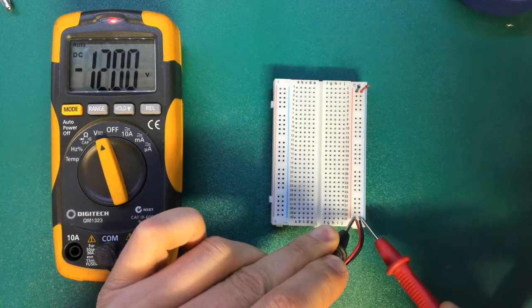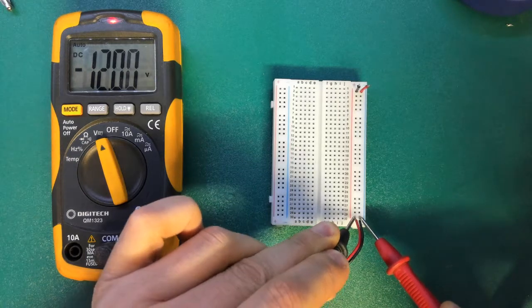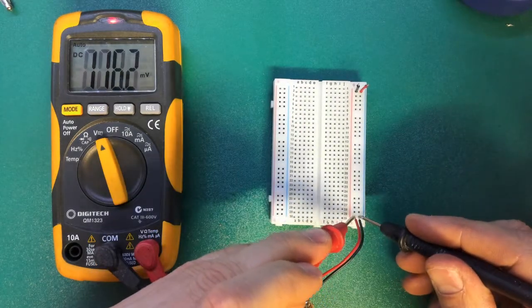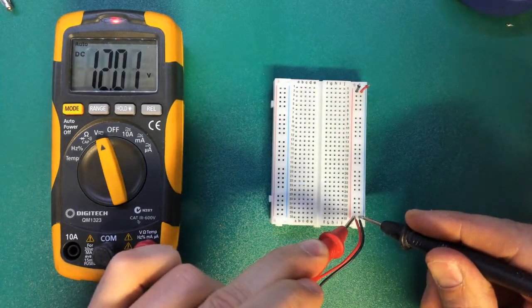I've got the red probe on the black cable and the black probe on the positive. So here we have 12 volts on our input.